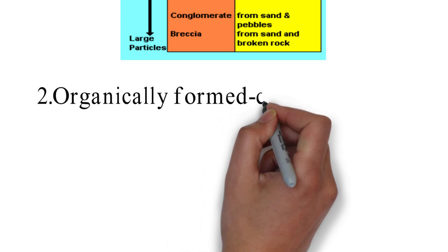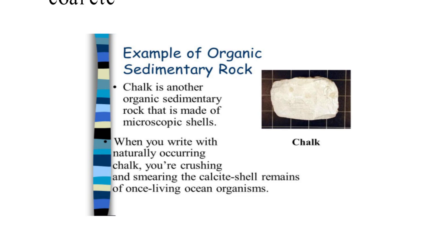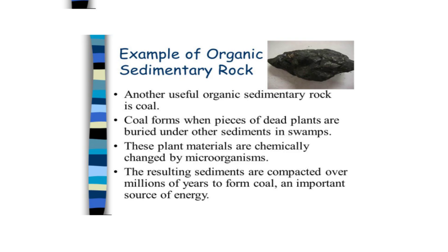Second type of sedimentary rock is organically formed sedimentary rocks. These are, for example, chalk, limestone, coal, etc. These rocks formed over the period from organic material. For example, we know that coal is formed from the fossil remains of plants. Chalk is another organic sedimentary rock that is made of microscopic shells. When you write with naturally occurring chalk, you are crushing and smearing the calcite shell remains of once living ocean organisms. Coal forms when pieces of dead plants are buried under other sediments in swamps. These plant materials are chemically changed by microorganisms. The resulting sediments are compacted over millions of years to form coal, an important source of energy.